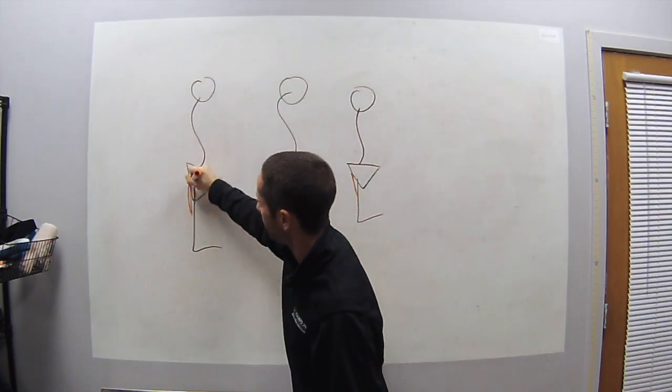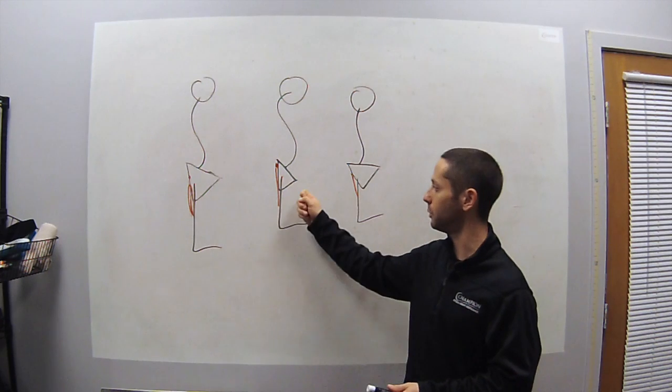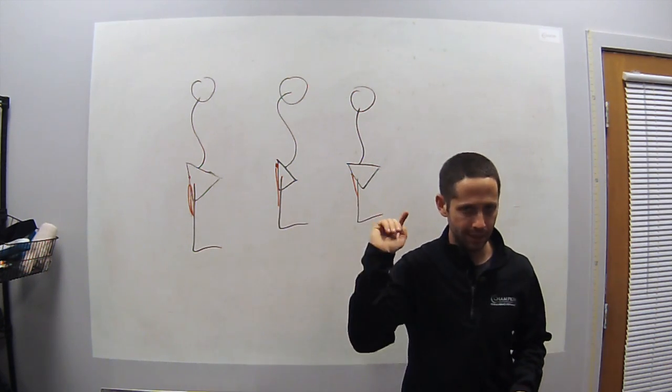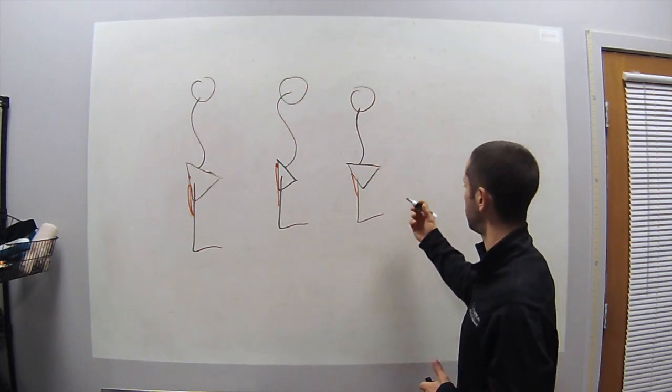So hopefully that's kind of showing up where you guys can kind of see that. But what tends to happen is this person with the anterior pelvic tilt thinks they have a tight hamstring, because they have a decreased straight leg raise or some sort of thing when they're trying to stretch.